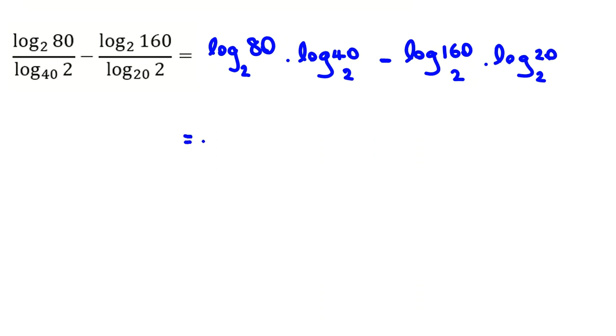Now, I prime factorize the numbers here. 80 is 16 times 5, which is 2 to the 4 times 5. Then log base 2 of 40, which is 8 times 5, which is 2 cubed times 5.